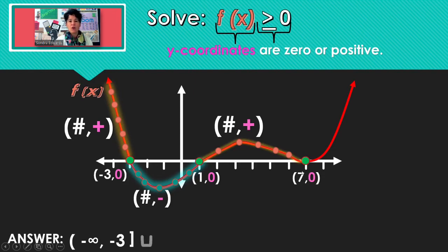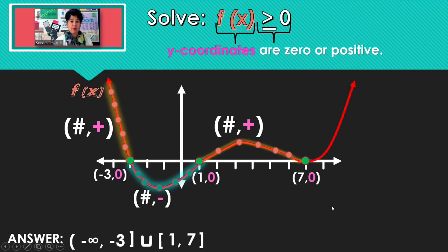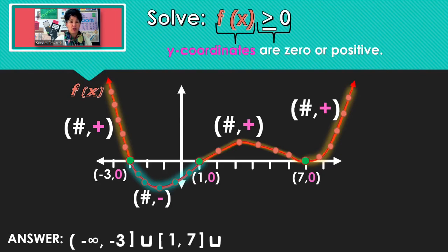So far we're going to be using 1, including 1, through 7, including 7, because 1 and 7 both work. Let's keep looking — all of the points along there also have positive y-coordinates.